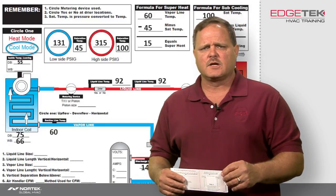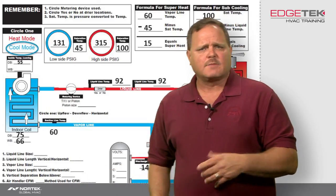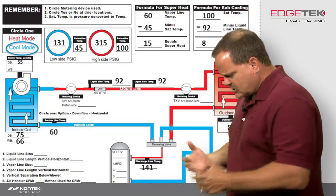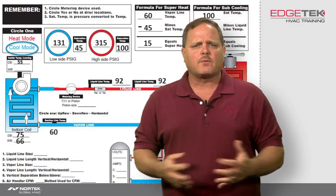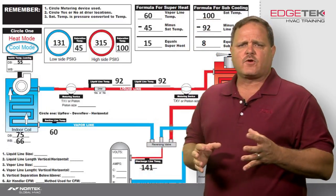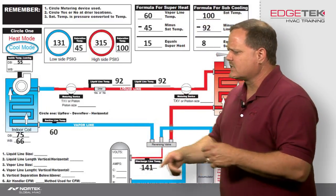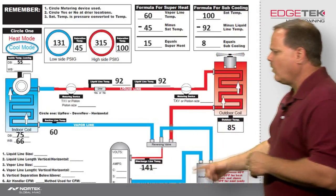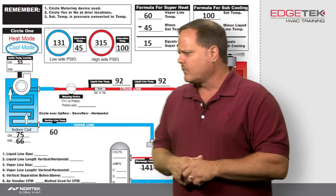Once you know what that required superheat is, we can move on to using these job checkout sheets to determine what's going on with the system. For this first example, this is a normal operating system, and our load conditions for all the examples I'm going to give you here are not going to change. We're going to keep a 66 degree wet bulb temperature entering the evaporator and hold an 85 degree outdoor temperature through all the examples.